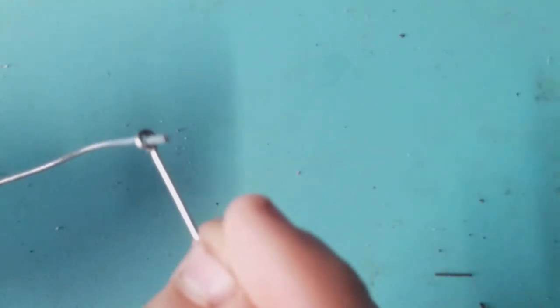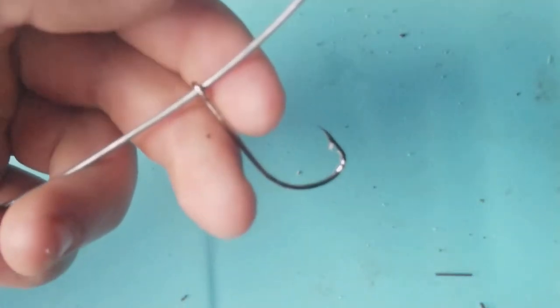First, take your hook and slide it onto the piece of wire, just like this.